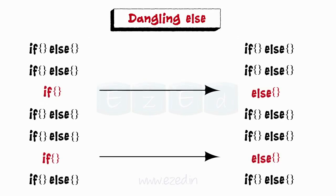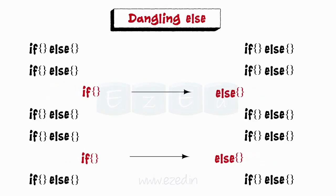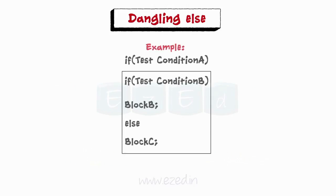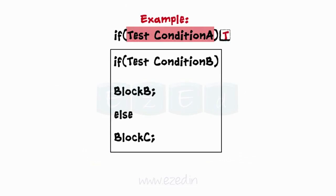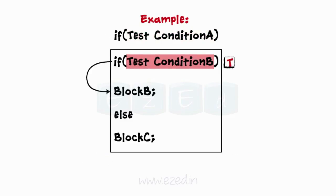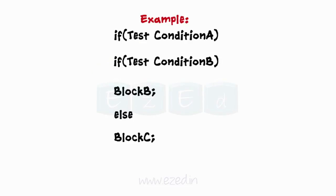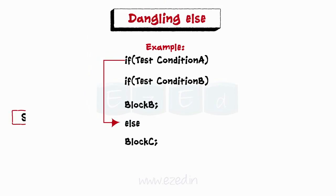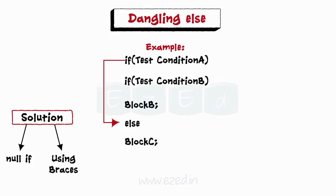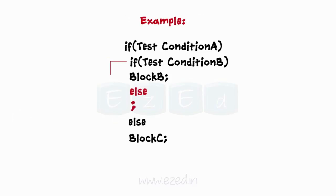The dangling else problem occurs when there is no matching else for each if. To avoid this, always pair an else to the most recent unpaired if. If test condition A is true, execution moves to test condition B; if B is true, block B is executed, else block C is executed. In this code, else is automatically paired with the closest if — but the programmer's intent may have been for else to associate with the outermost if. This can be fixed by adding a null else or by using braces to enclose the true action of the inner if.